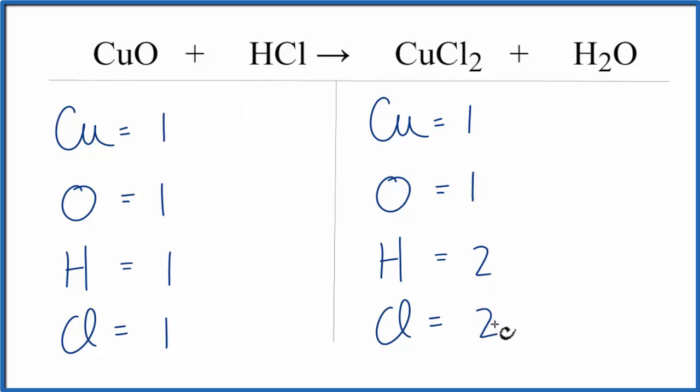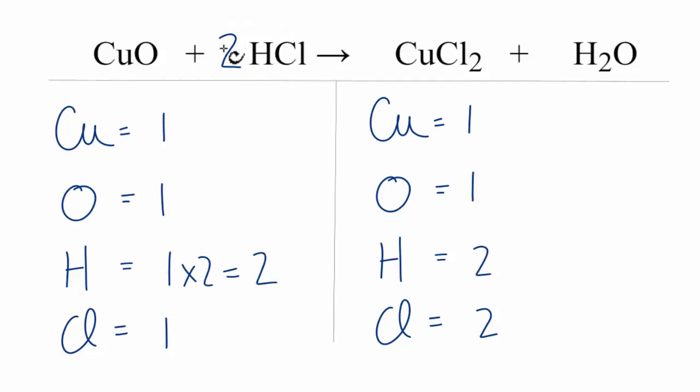We need 2 hydrogens and 2 chlorines. So if we put a coefficient of 2 in front of the HCl, that 2 applies to everything here. So we have hydrogen 1 times the 2, that'll give us 2 hydrogens. Those will be balanced. And chlorines, 1 times the 2, we have 2 chlorines.